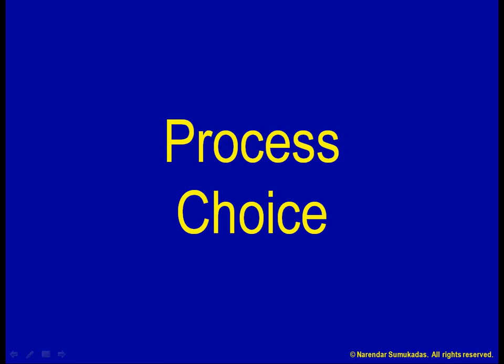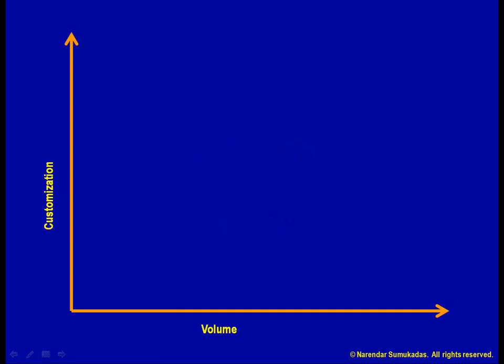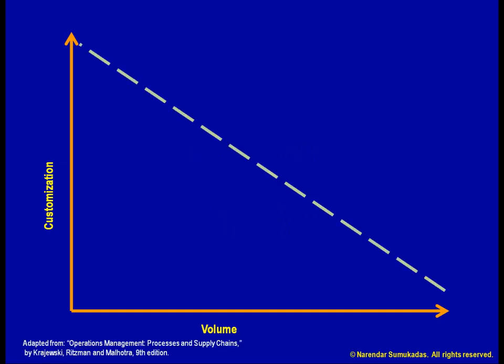Let us now expand on our basic diagram. Given that different competitive priorities are pulling us towards different sides of this diagram, depending on our customers' needs and our chosen combination of order winners and qualifiers, we need to pick an appropriate process along the diagonal.